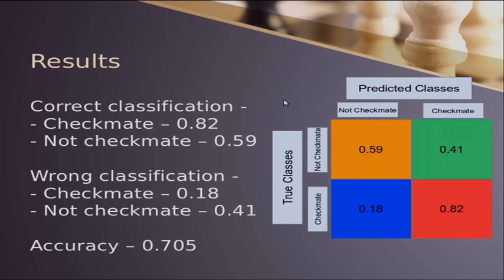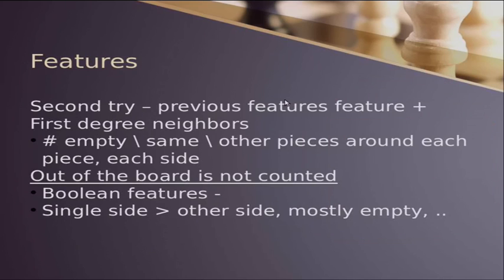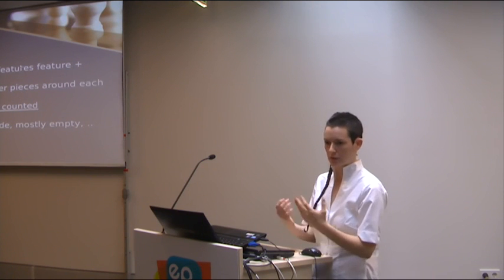And the next thing was using the previous features and using data about the first degree neighbors. In this case, we didn't look out of the board and we excluded it, but we'll do that on the next versions. So we looked at the data of empty, is it of the same side of the piece we are looking on, or from other piece around it? And we aggregated the data for all the different pieces on the board from each party. And we also built some Boolean features based on this data. For example, is there more pieces around me from my side or from the other side? Is it mostly empty? And so on, such features.